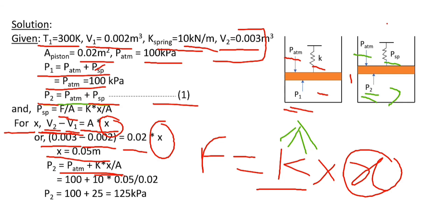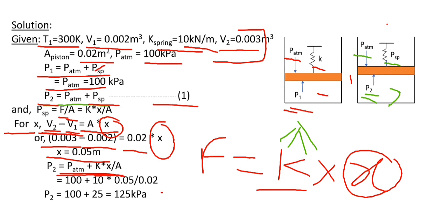All values are now known, so after substituting these known values, we get the final pressure of air inside the cylinder, which is equal to 125 kilo Pascal.